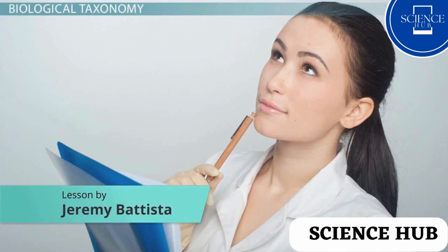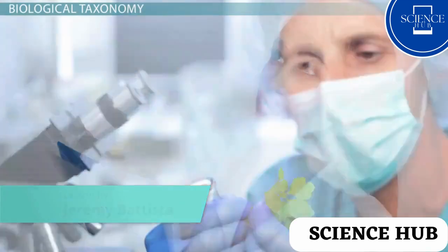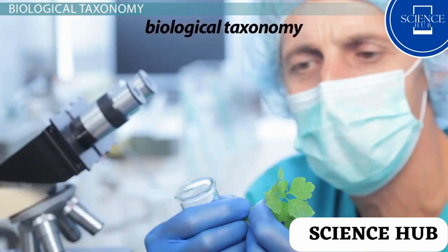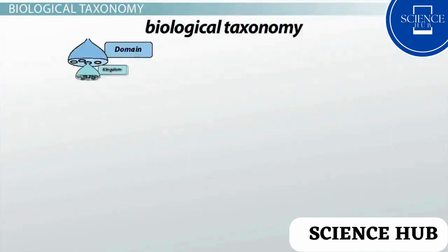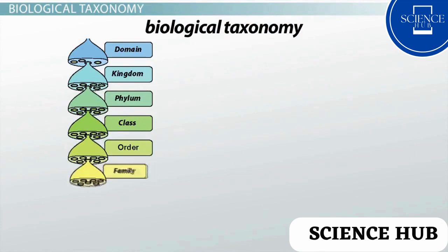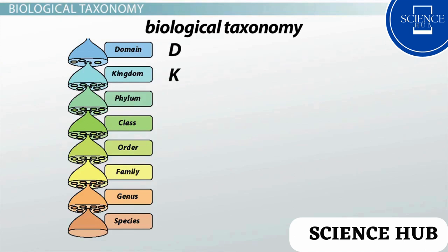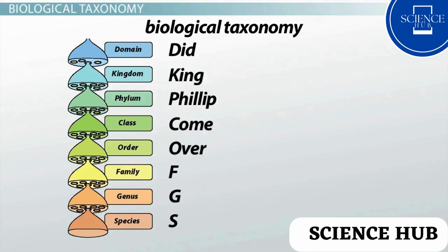In science, we've developed a way to keep organized. In biology specifically, we have a method called biological taxonomy. There are eight rankings to help us keep living things organized. These ranks, in order of most general to most specific, are: domain, kingdom, phylum, class, order, family, genus, species. An easy way to remember this is to take the first letter from each rank: Did King Philip Come Over For Great Spaghetti.